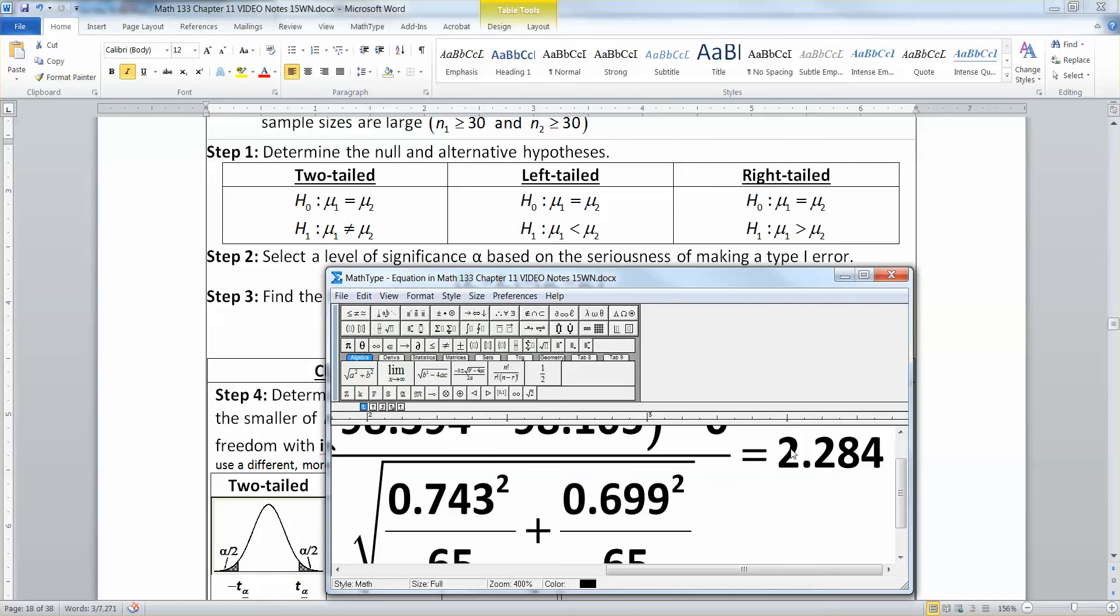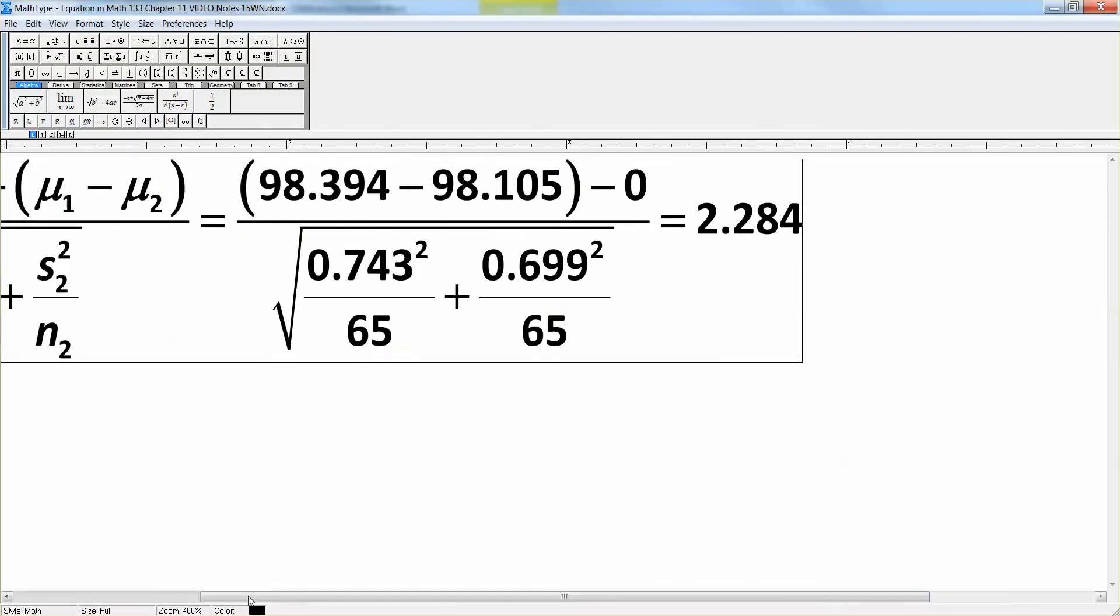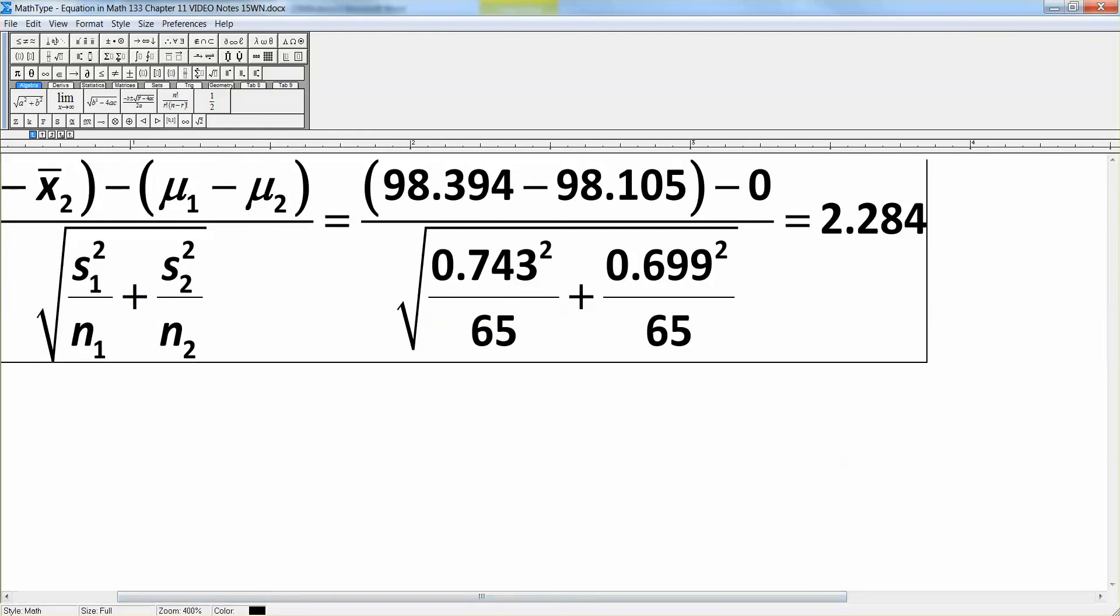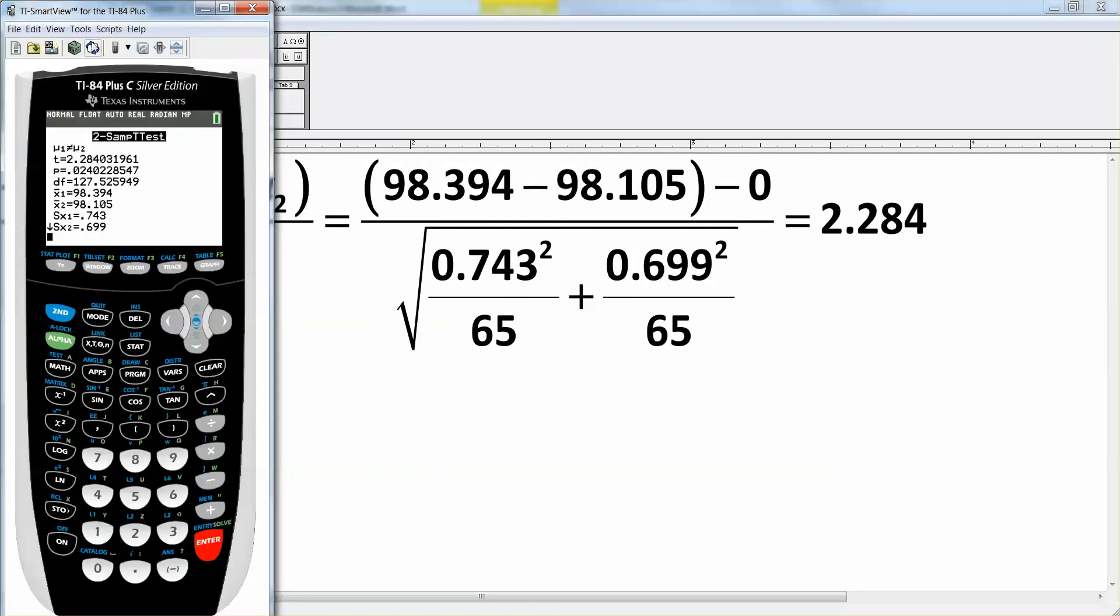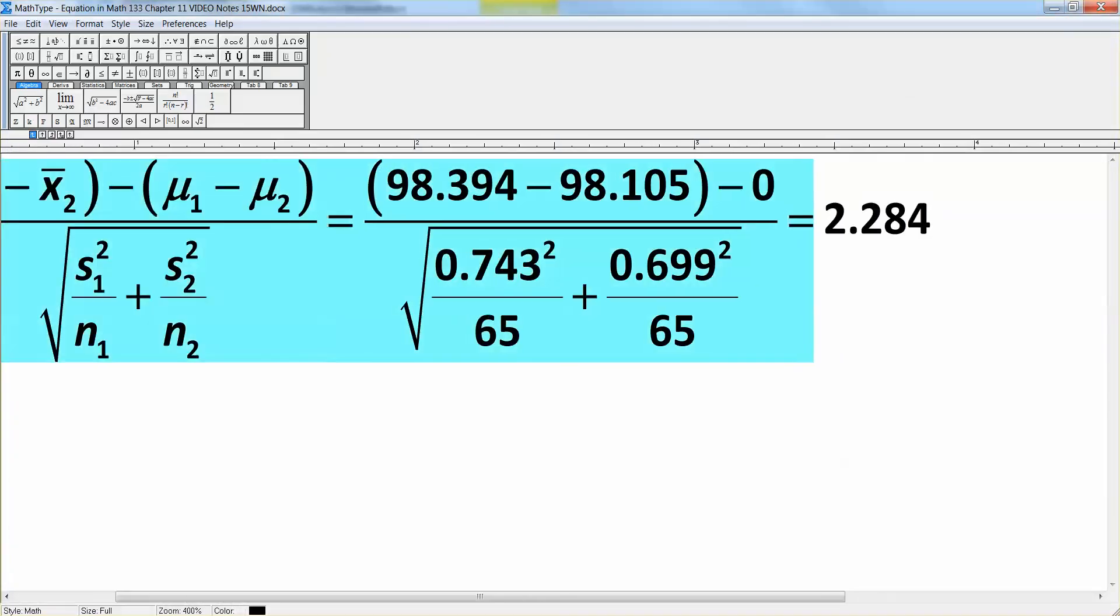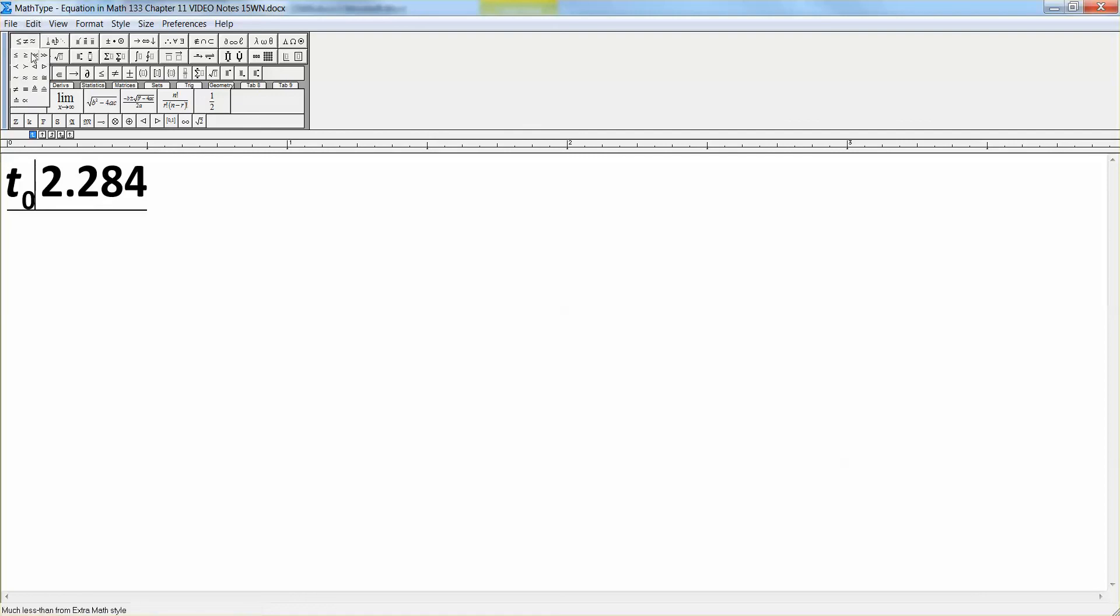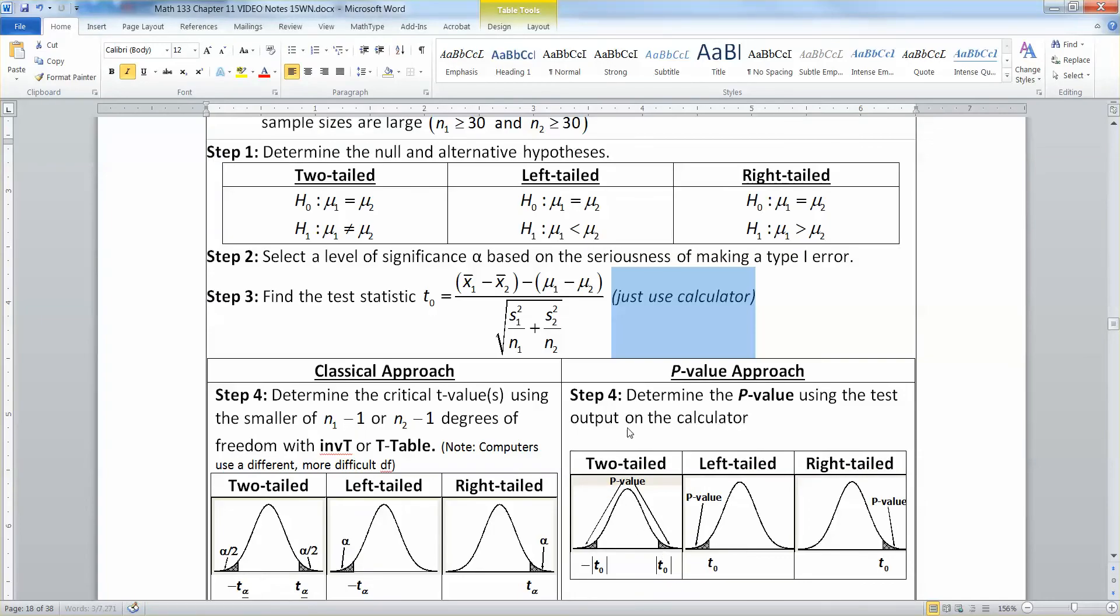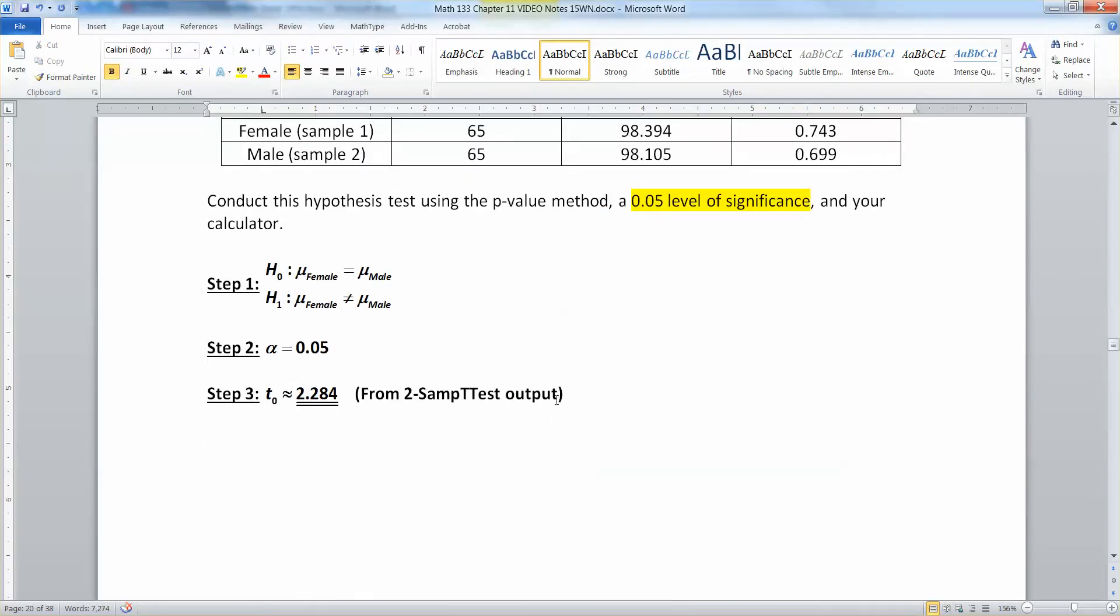And you're going to get the number 2.284. Now, where are you going to get that from? That big rigmarole. Well, it's right there in the calculator. See where it says T? T equals 2.284. Right there. That's all you need. So T is about - and I don't need any of this garbage if I don't want it, because this is the one test Alana is not going to make me do all that junk. So it's about 2.284. And I'm going to make a little note to myself that I got that from the 2-SAMP-T test output.